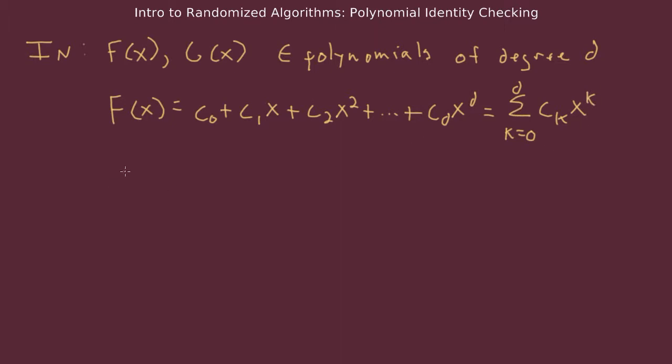We will also assume that g of x is written as a product of terms. So converting from a product of terms to a summation of terms is something that is taught in basic algebra. For example, factoring a polynomial and multiplying out a product of terms to find a polynomial are both done in basic algebra. So we will call f summation form and g product form.